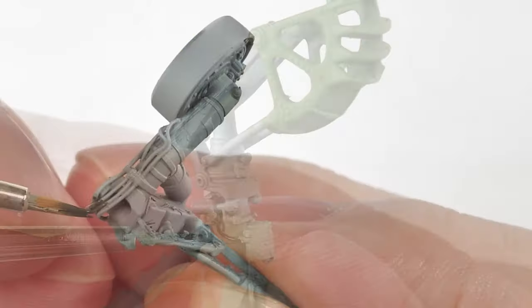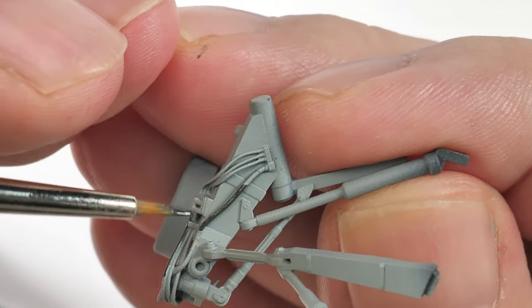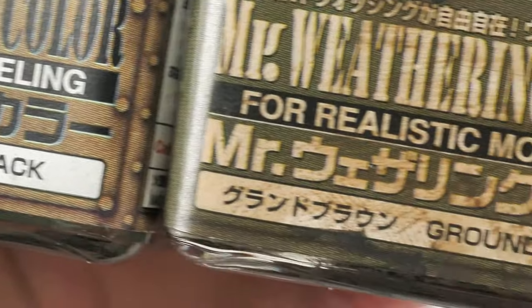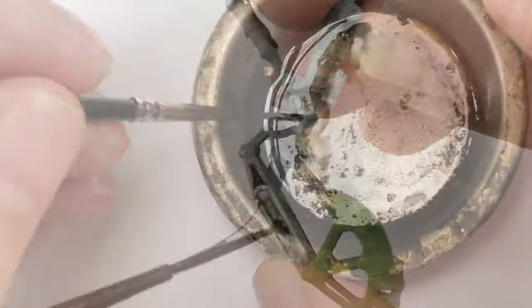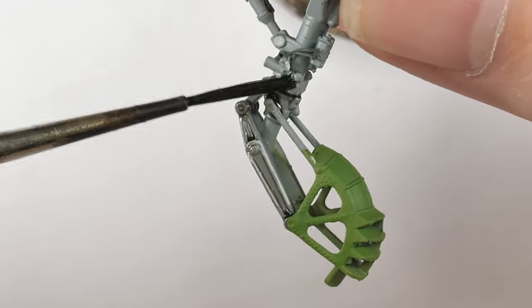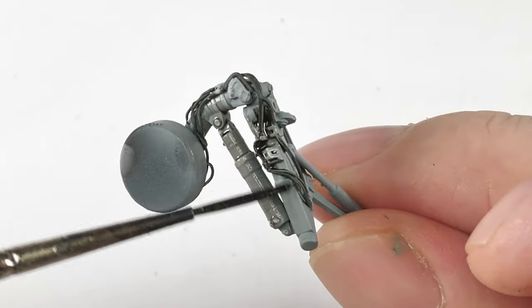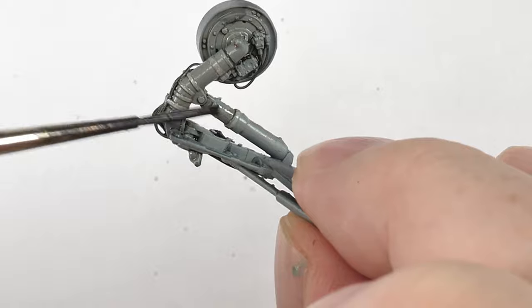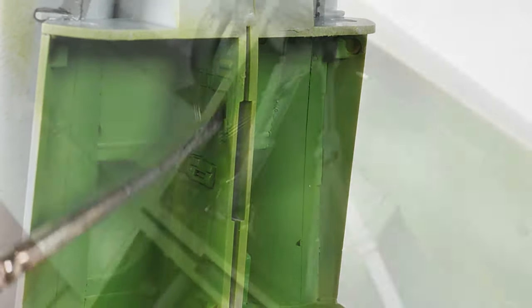And because we've got all this nice detail on the landing gear, it definitely needs to be picked out and painted. So we used a black-brown paint to hand paint all of the cables and brake lines on that gear. And also I decided to apply the wash at this stage as well, just getting this landing gear basically complete, so I wouldn't really have to come back to it later on.